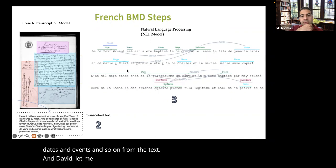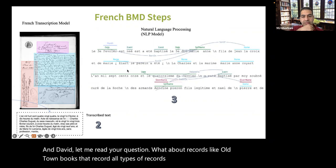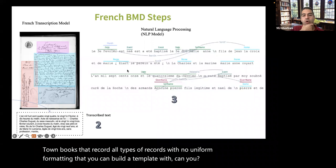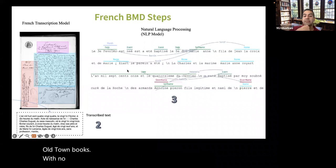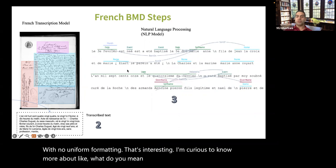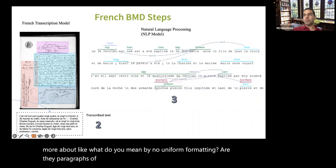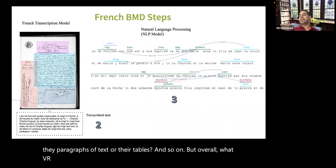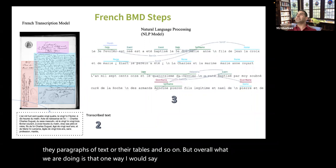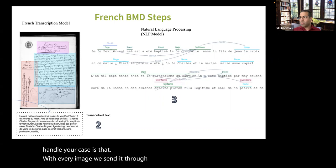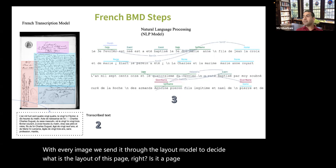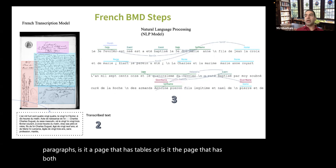There's a question from David: what about records like old town books that record all types of records with no uniform formatting — could you build a template for that? For old town books with no uniform formatting, one way we can handle this case is that with every image, we send it through the layout model to decide what is the layout of the page — is it paragraphs, tables, or something else? AI is good enough to decide on that. If it sees a table, it routes to one AI model; if it sees paragraphs, it routes to a different one.